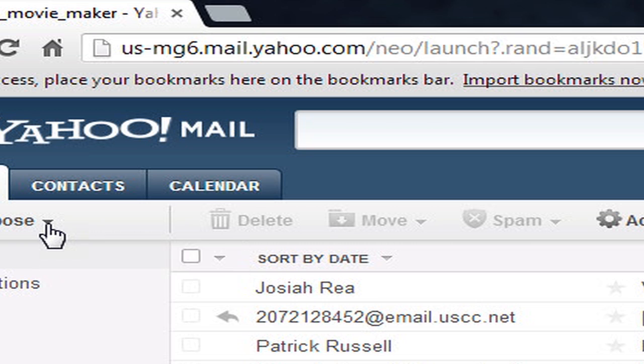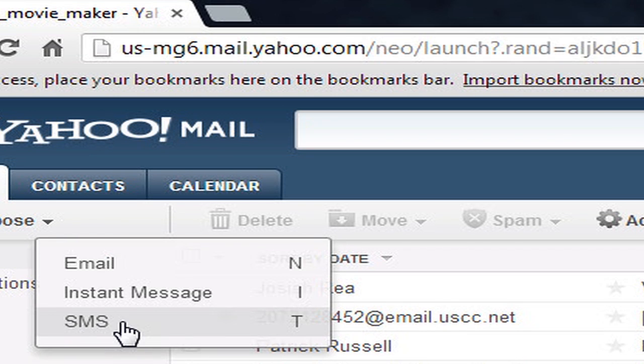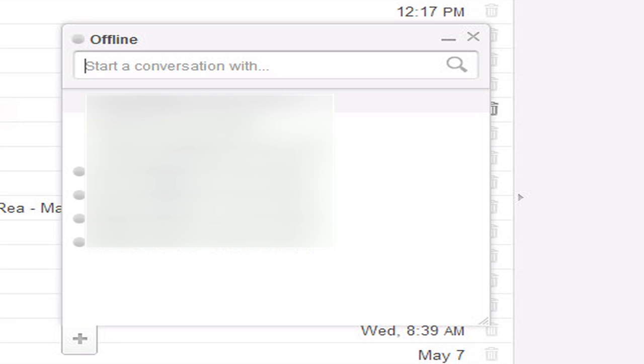Now there's a couple of different ways to do this. The first way is, if you're inside of Yahoo, we're going to click the little arrow next to Compose and say SMS message. And it will pop up this little box, and we can actually start typing in a phone number.